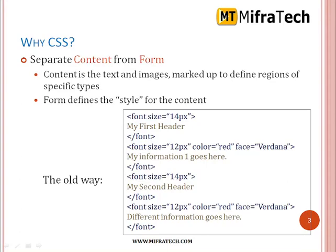To separate the content from form. When you are writing a paragraph, for example, you can see the font size is equal to 12 pixels, color is red, and the font face is specified. That information is displayed within the size of 12 pixels and the color is red, and the font face has been set as given.